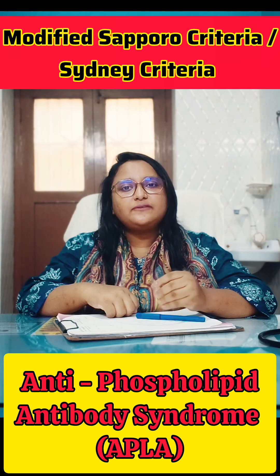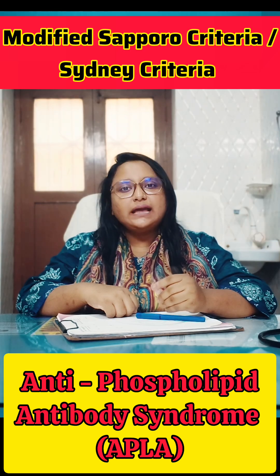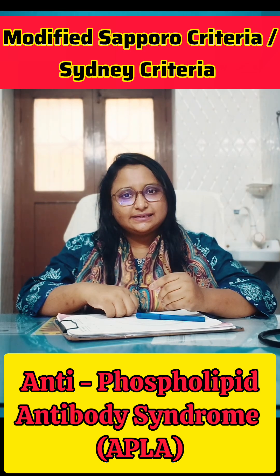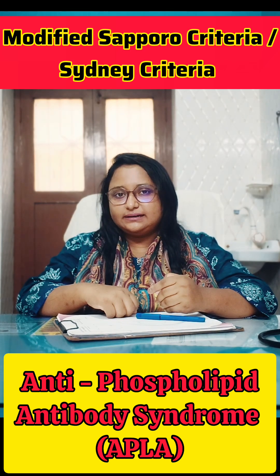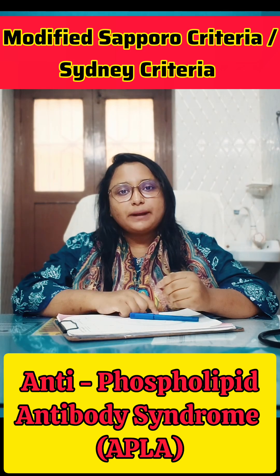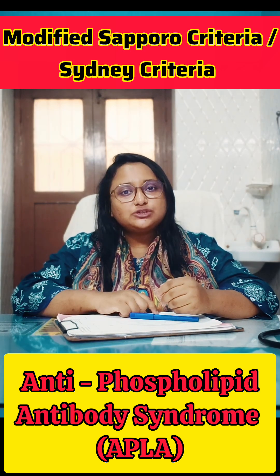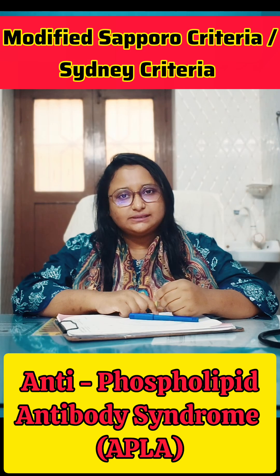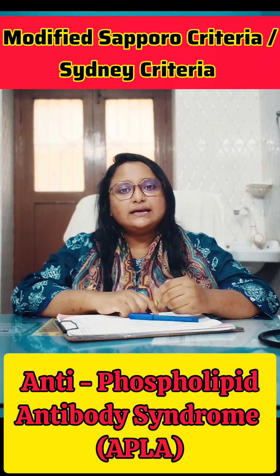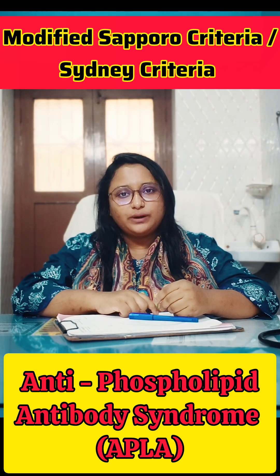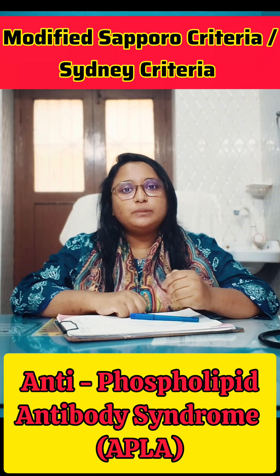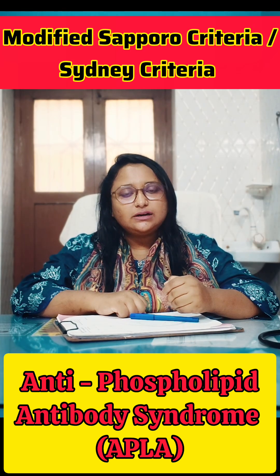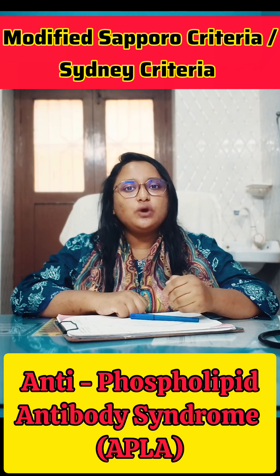If any one of these four clinical criteria is present, then we say yes. Along with this, there has to be one laboratory criteria. Lab criteria says there should be medium to high titer of antibodies — any one of either lupus anticoagulant, anti-cardiolipin antibody, or beta-2 glycoprotein antibody — present on two occasions, 12 weeks apart.